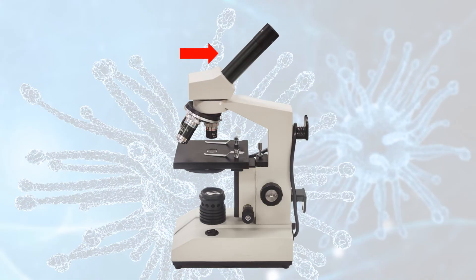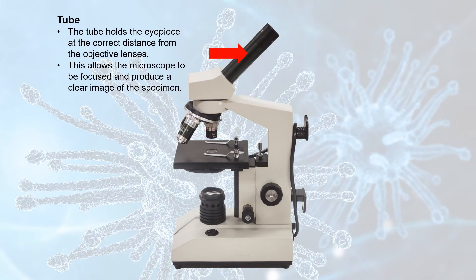Next, we have the tube. The tube holds the eyepiece at the correct distance from the objective lenses so that the microscope can be focused to produce a clear image of the specimen.